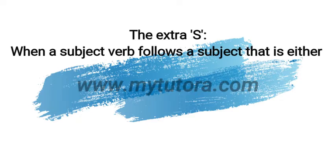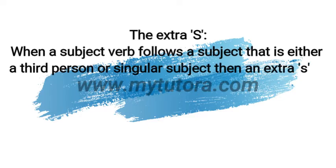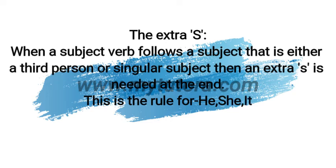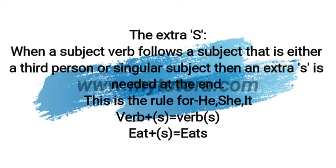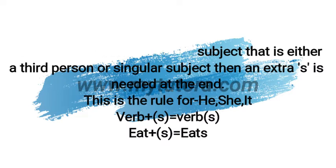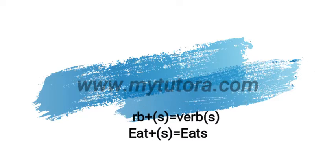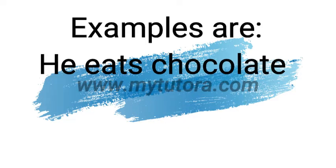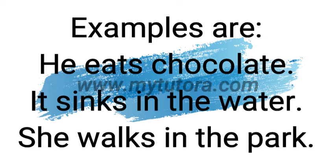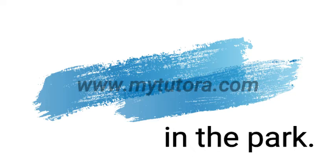Now have a look at the extra S. When a verb follows a subject that is either a third person or singular subject, then an extra S is needed at the end. This is the rule for he, she, and it. The structure is verb plus S equals verb. Similarly, eat plus S equals eats. Examples are: he eats chocolate, it sinks in the water, she walks in the park.